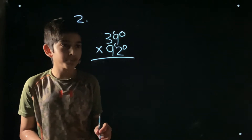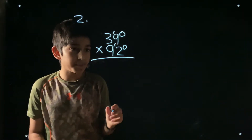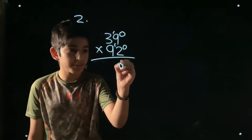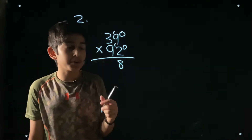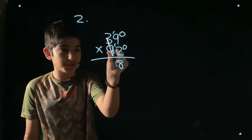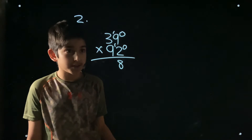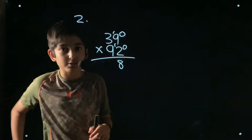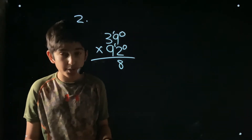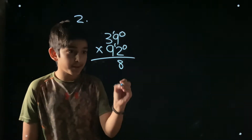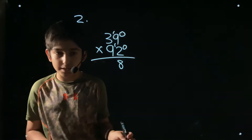Another example: 39 multiplied by 92. For position zero, multiply 9 times 2 — that's 8 with a carry of 1, so remember that. For position one, the cross pairs are 2 times 3 equals 6, and 9 times 9 equals 81. Add them: 6 plus 81 is 87, plus the carry of 1 is 88.